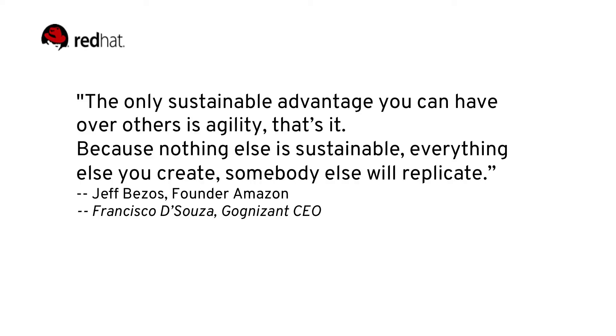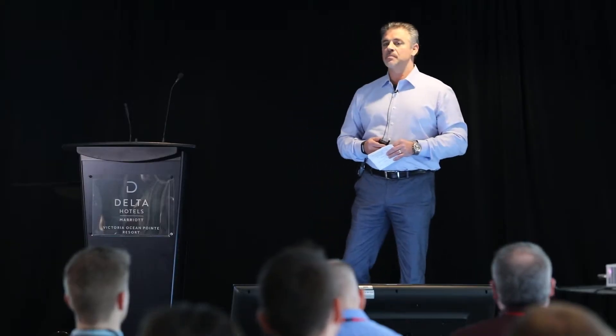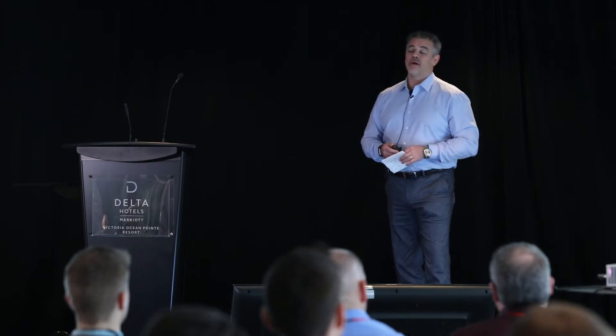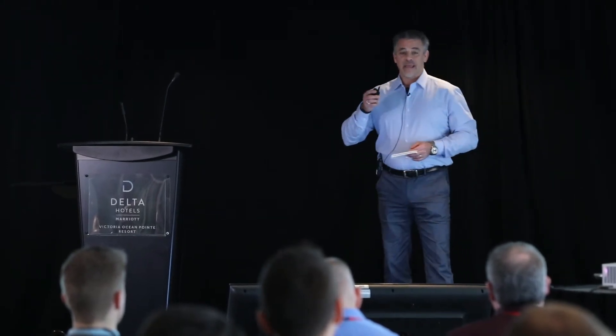Another Jeff Bezos quote: 'The only sustainable advantage you can have over others is agility. That's it. Nothing else is sustainable. Everything else you create, somebody else will replicate.' This is the model of companies like the Ubers and Airbnbs of the world — how they're disrupting businesses because they can come along without any legacy dragging behind them and all of a sudden become the 800-pound gorilla in the room. Francisco de Souza, Cognizant CEO, used the exact same quote in another article — people tend to plagiarize everyone else's words.